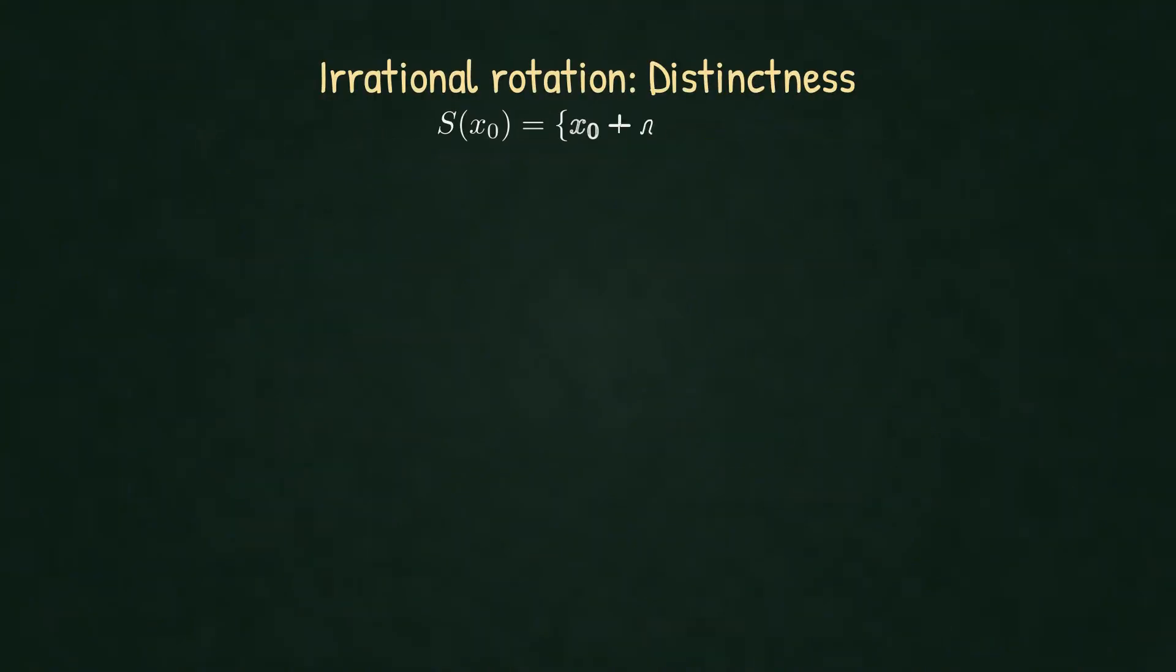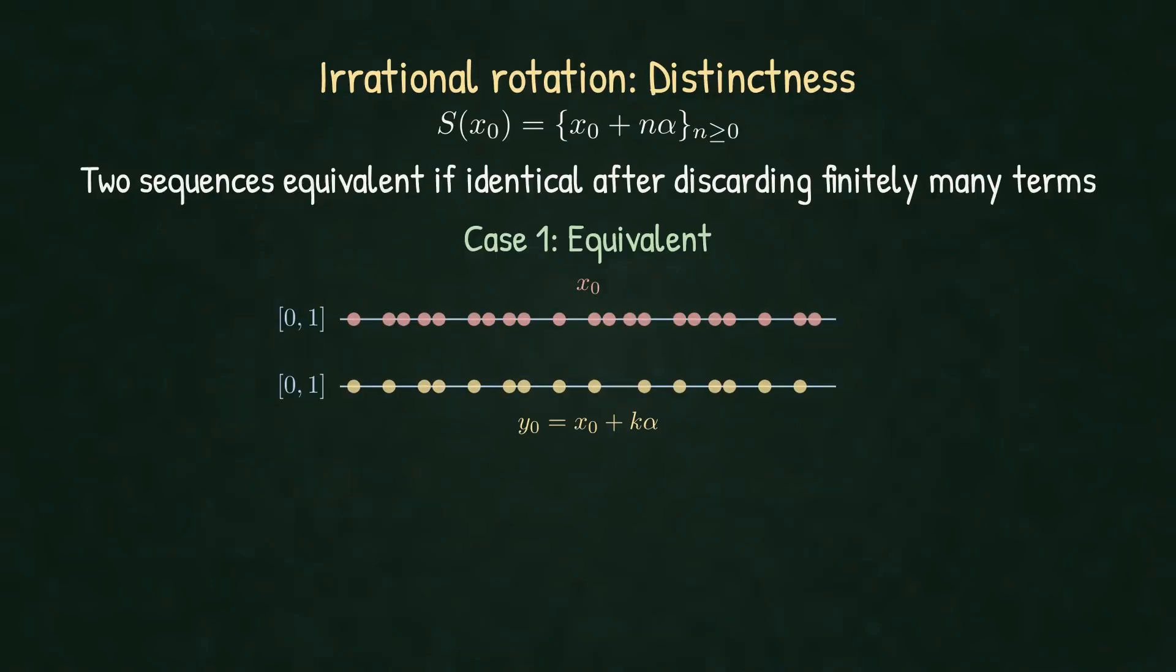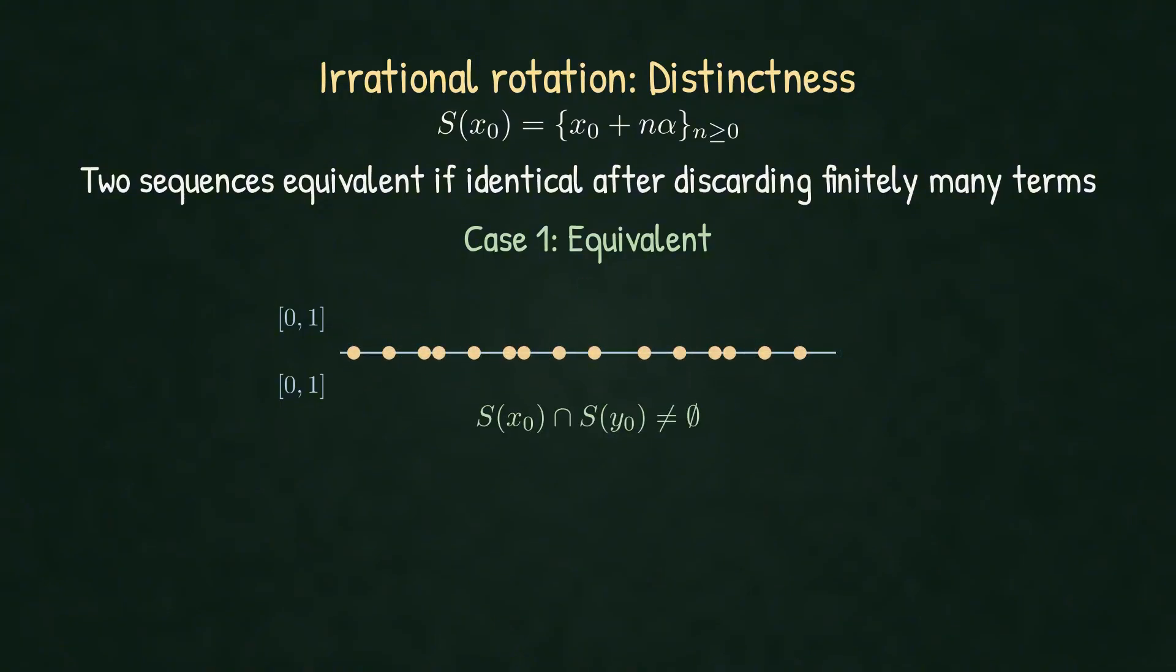Second property: distinctness. Consider two sequences, x0 and y0. If y0 equals x0 plus some multiple of α, they are equivalent—just shifted versions. After discarding the first few terms, they overlap perfectly. The points coincide.